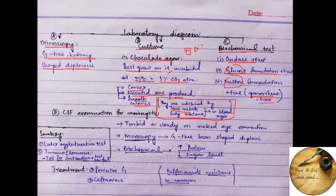You can also do the CSF examination for meningitis which shows turbid or cloudy appearance in naked eye examination. In microscopy from the CSF we can see gram-negative bean-shaped diplococci, and in biochemical CSF the protein content is increased while the sugar content is decreased in meningitis.